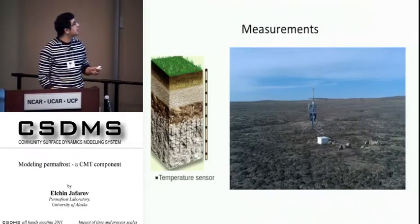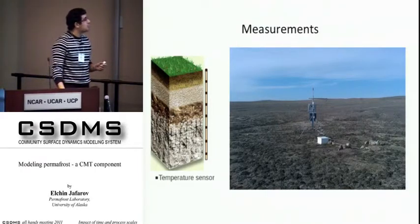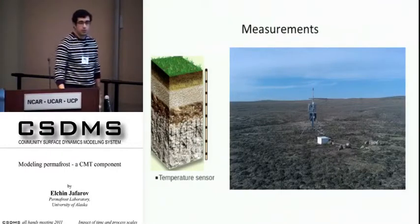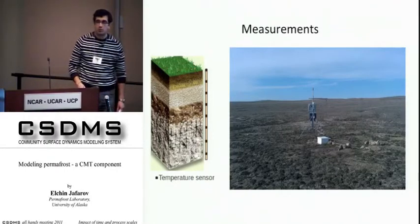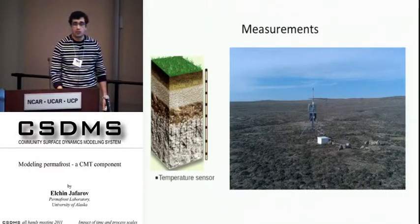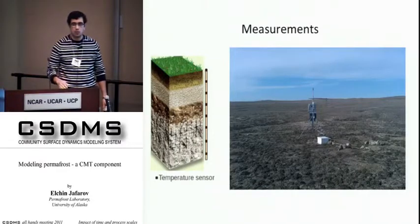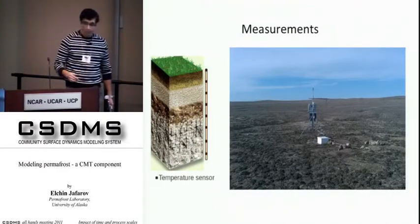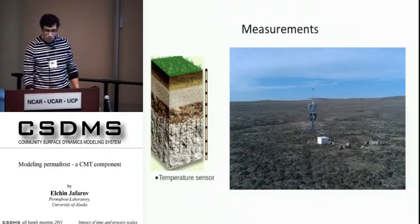Besides temperature measurements, we also have soil moisture sensors which measure soil moisture in the unsaturated zone. It's usually up to three soil moisture sensors at depths up to 60 centimeters.